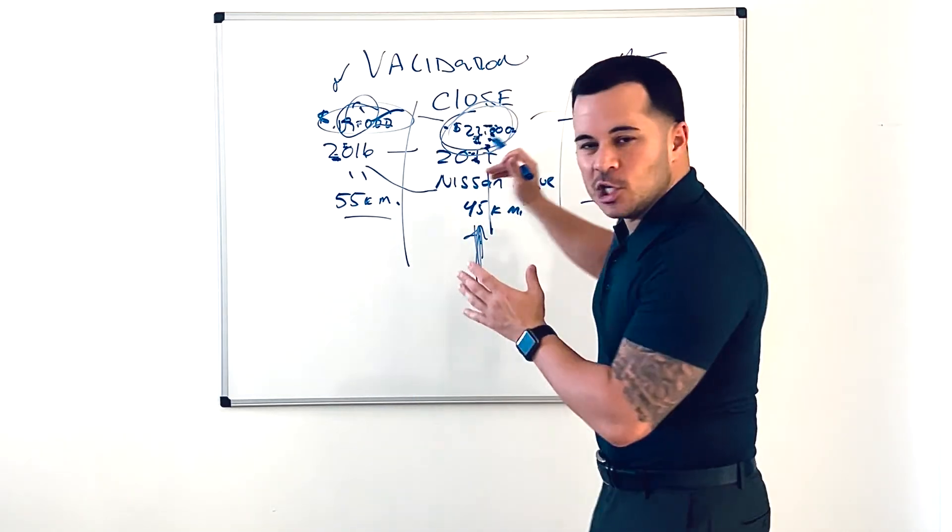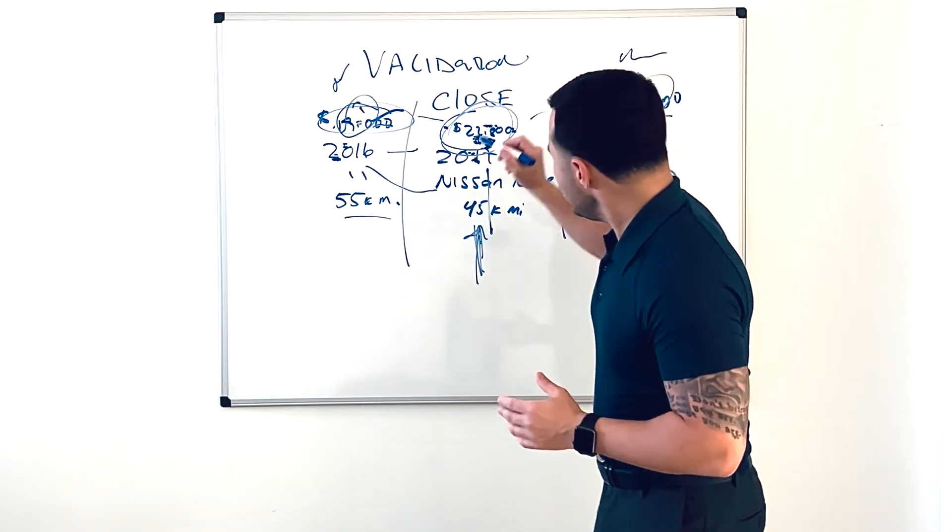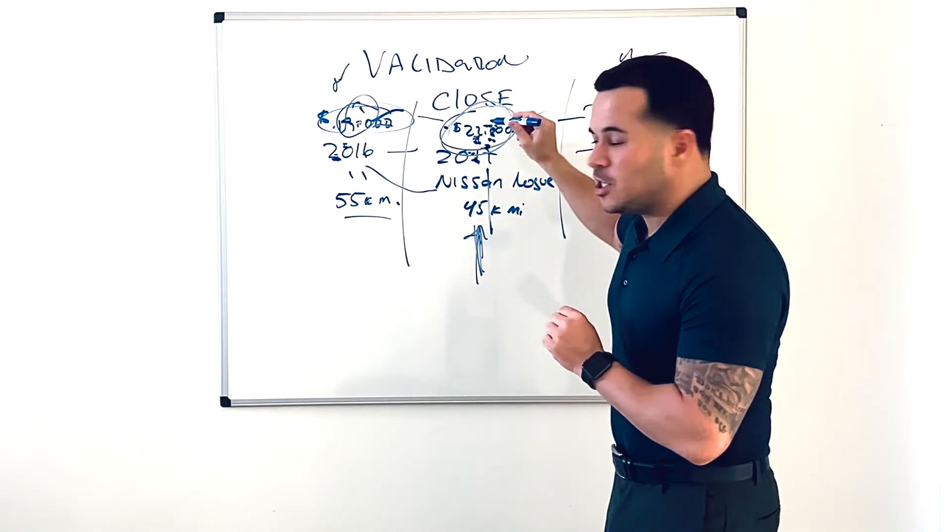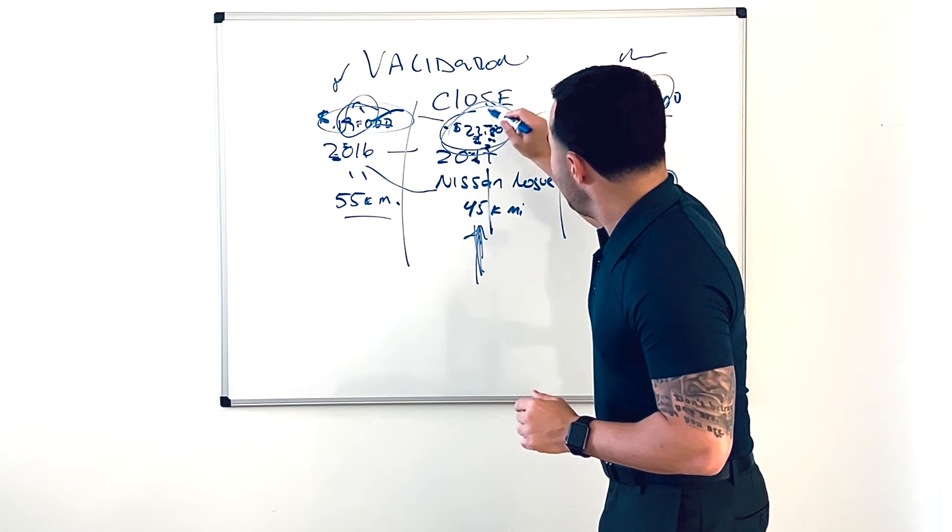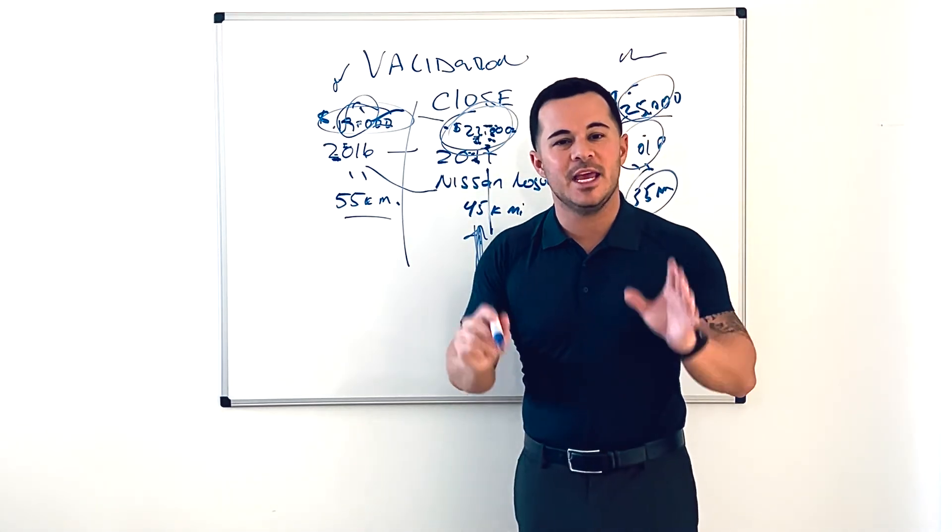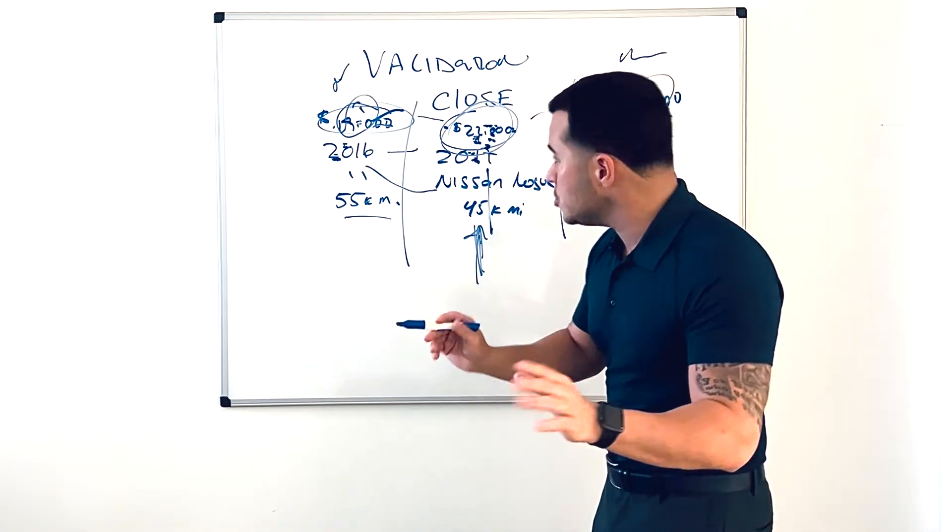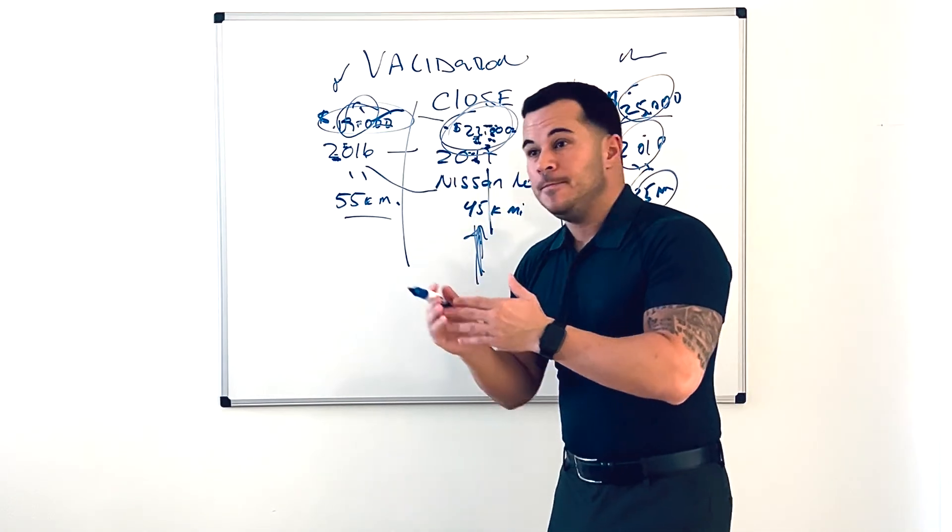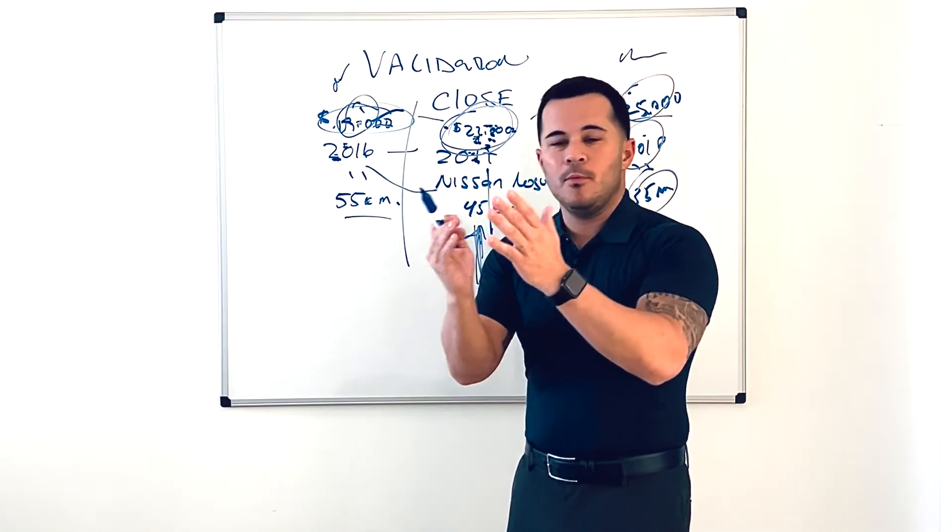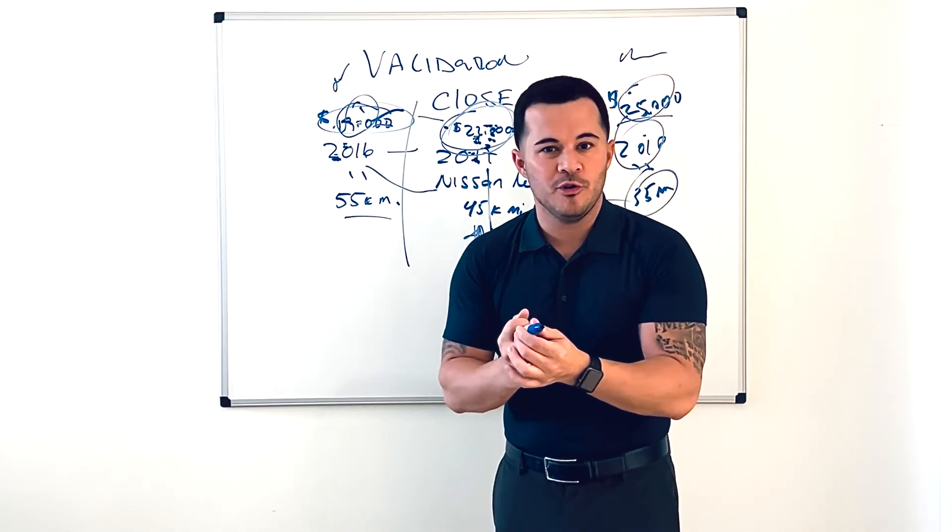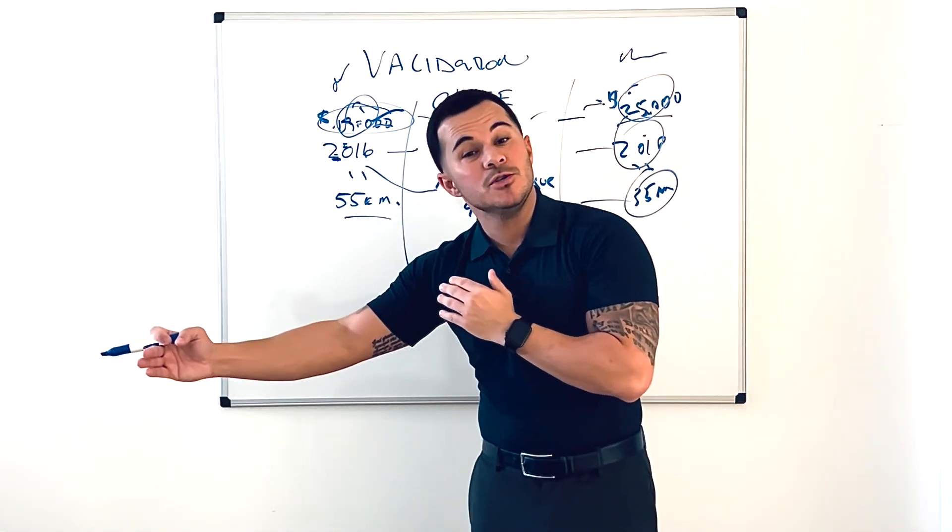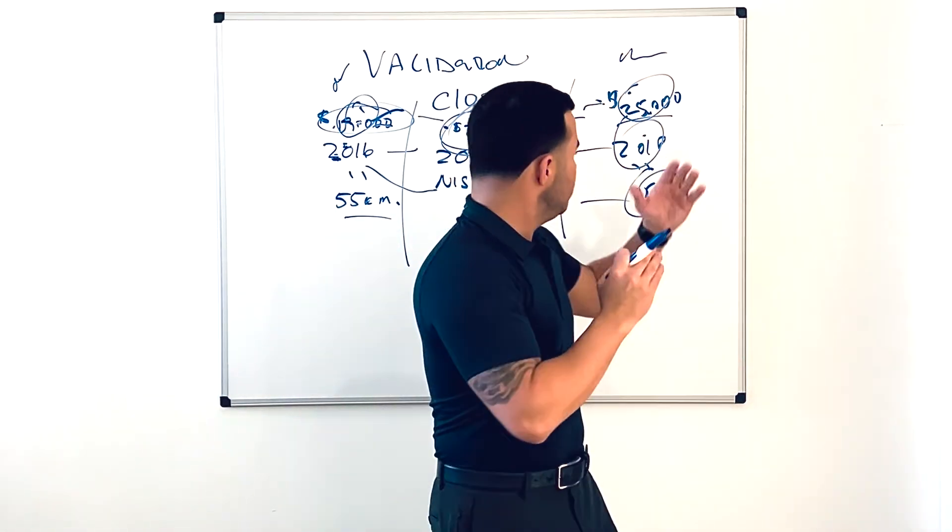But the validation close, the goal of that—and sorry, I just screwed the marker board, it's my first video on the marker—the validation close, the goal of that is to validate the $22,000 price point on the 2017 by showing them in comparison a vehicle that's older, $3,000 less. You could make that $2,000, whatever gap you want to create for the older one. Just make sure you do the same thing for the newer one. Whatever difference in miles you want to do for the older one, make sure you do the same thing for the newer one.